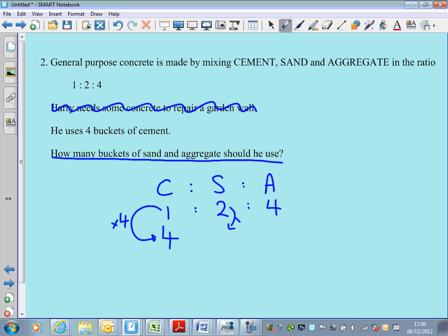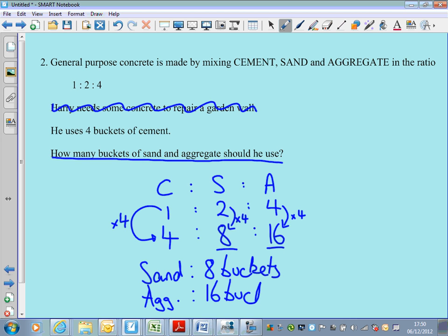That being the case, we'll times each of the other numbers by four to find out how much sand and how much aggregate we need. Two times four is eight. So you'll need eight bags of sand. Four times four is 16. So you'll need 16 bags of sand. If you've got a fussy teacher, if you've got a fussy teacher who needs you to write these things out, then write, by all means, sand, eight buckets, and aggregate. I can't really be bothered to write it all out. I'm going to write ag 16 buckets.